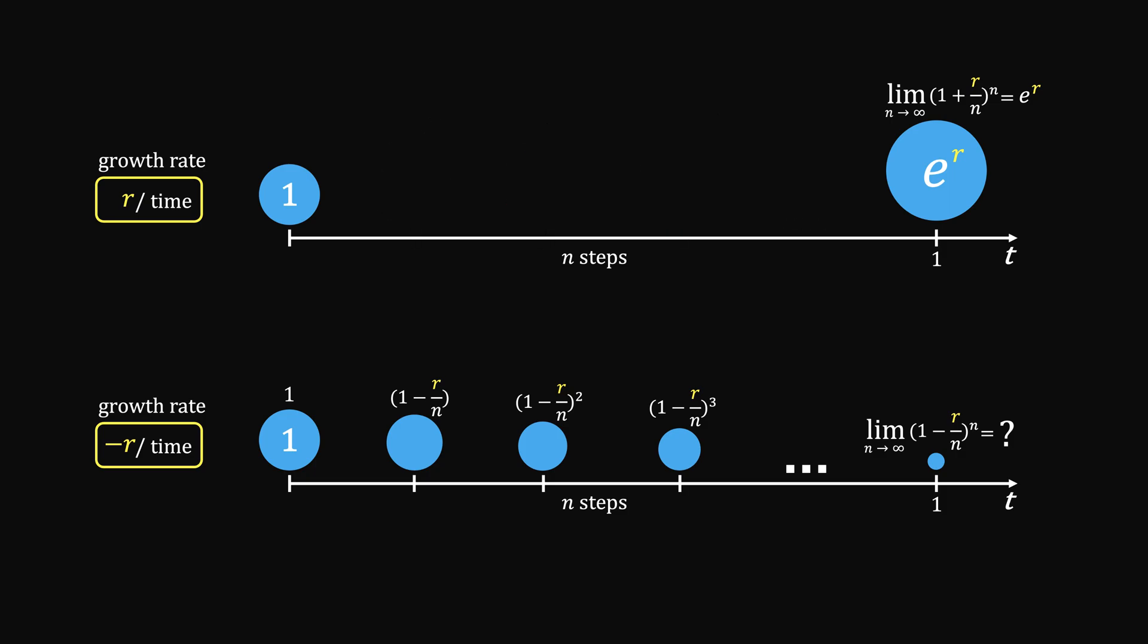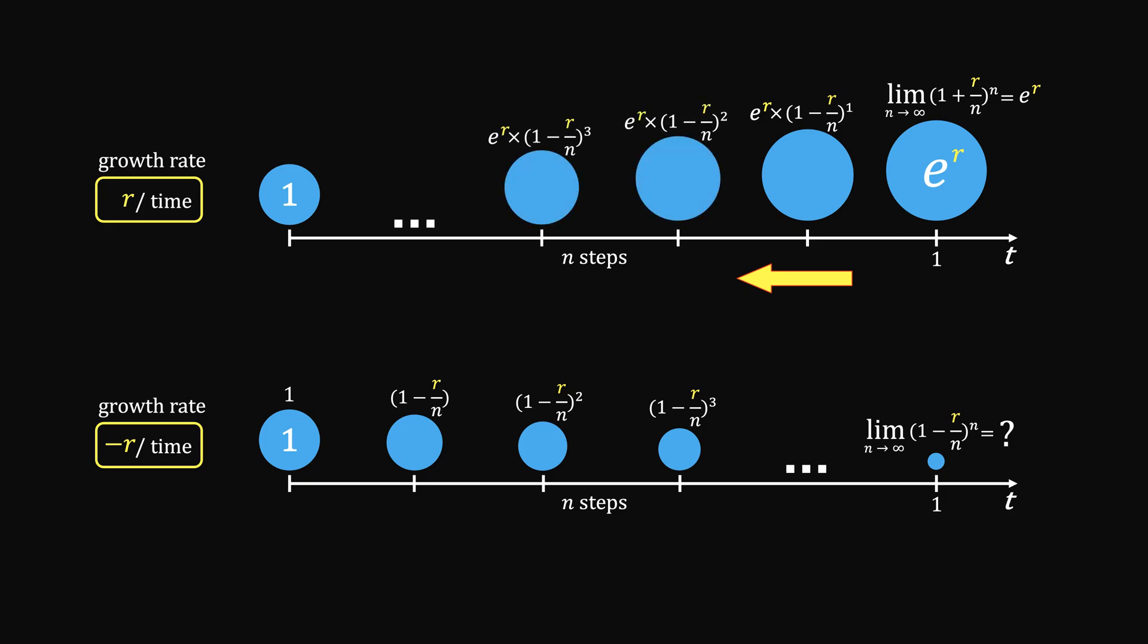Let's think of the growth problem in a reverse direction, starting from e to the power of r, so that each tiny interval shrinks by r over n. Going all the way to the beginning, it becomes e to the power of r times this term.